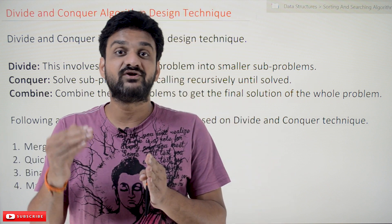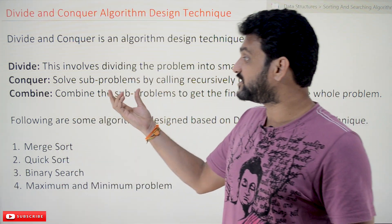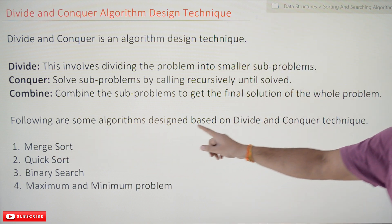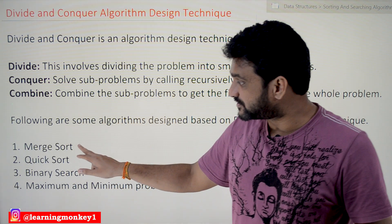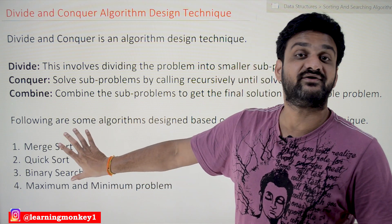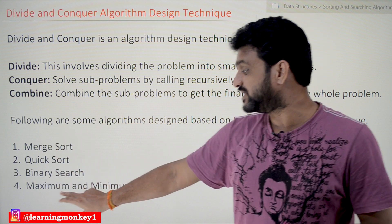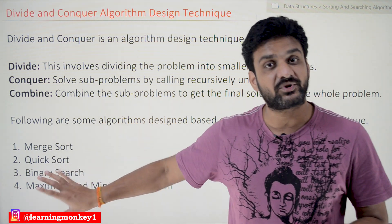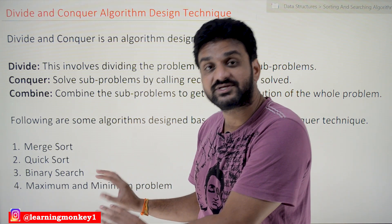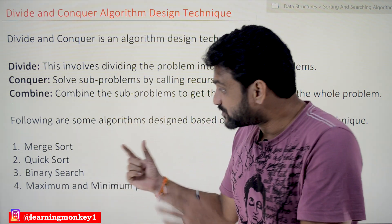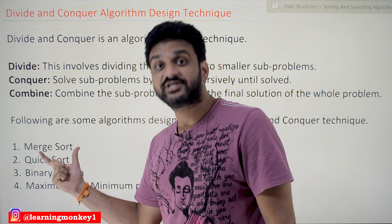There are different algorithms designed based upon divide and conquer. The following are some of the algorithms based on this technique: merge sort, quick sort, binary search, and the min and max problem. We are going to see each and every problem in detail in our later classes. The key point to understand is that the solutions for these problems are all designed based upon the concept of divide and conquer.